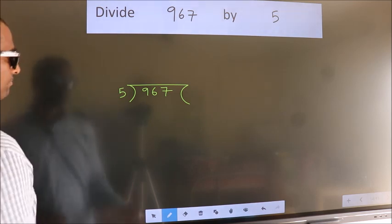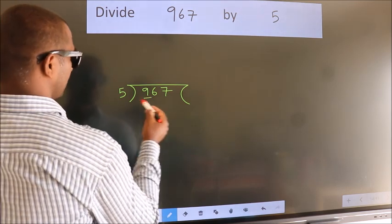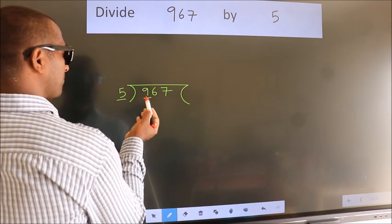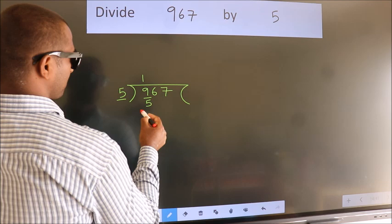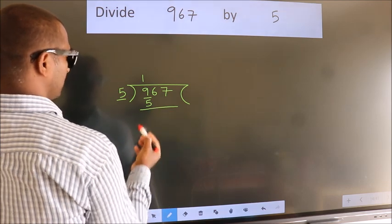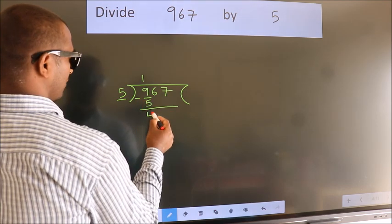Next. Here we have 9, here 5. A number close to 9 in the 5 table is 5 once 5. Now, we should subtract. We get 4.